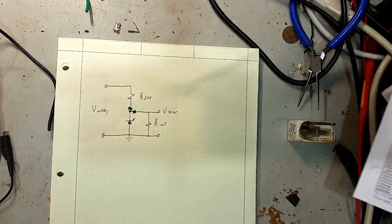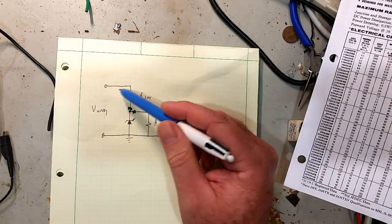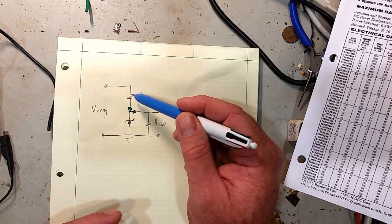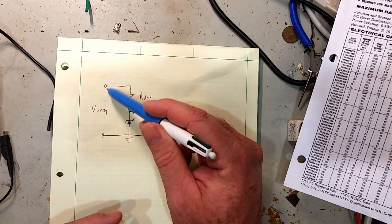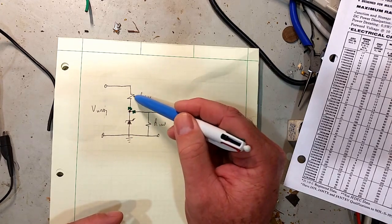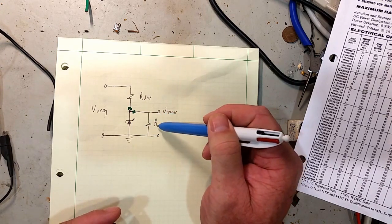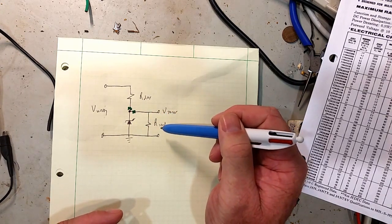If you look at how normally we would have connected this or built this into a circuit or use any kind of Zener, you usually have the unregulated voltage coming in, going through some kind of dropping resistor, and then the Zener which gives you a regulated voltage and then your load across that regulated voltage.